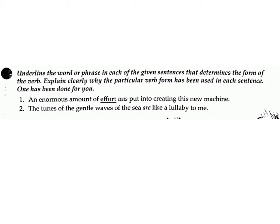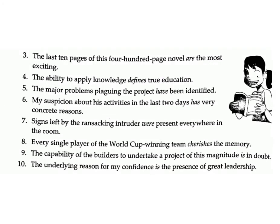Exercise C: Underline the word or phrase in each sentence that determines the form of the verb. Explain clearly why the particular verb form has been used in each sentence. 1. An enormous amount of effort was put into creating this new machine. Answer: effort. 2. The tunes of the gentle waves of the sea are like a lullaby to me. Answer: tunes. 3. The last 10 pages of this 400-page novel are the most exciting. Answer: pages. 4. The ability to apply knowledge defines true education. Answer: ability.